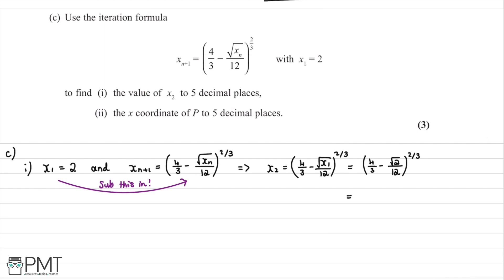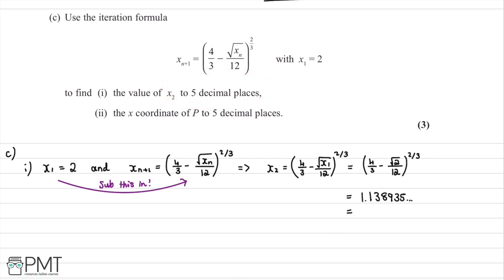We plug this into the calculator. This gives 1.138935..., and rounding to 5 decimal places — noting that the 6th decimal place is 5, so we round up — x₂ = 1.13894 to 5 decimal places.